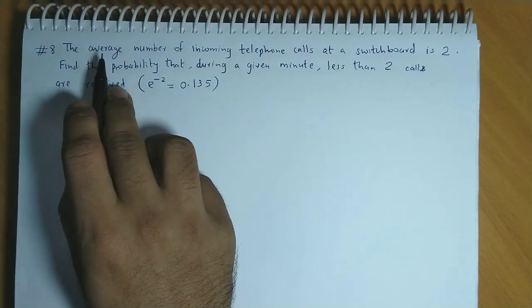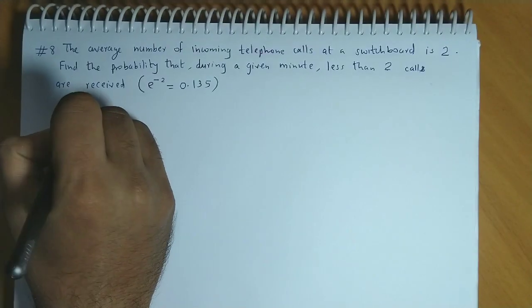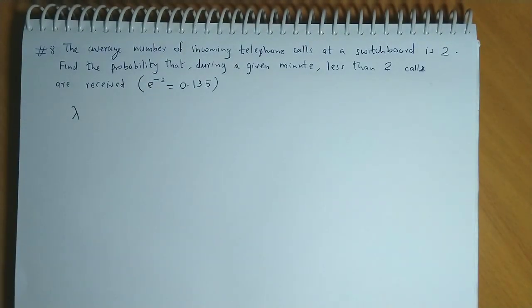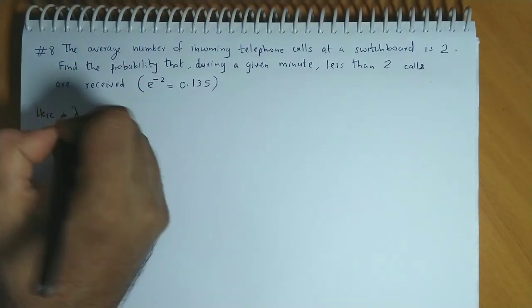So here is the average number of incoming calls. The average of Poisson distribution is indicated by lambda. So here the average number of incoming calls is lambda.